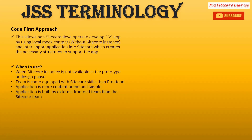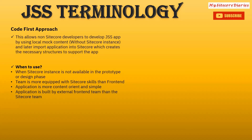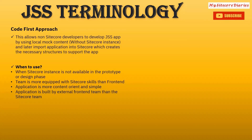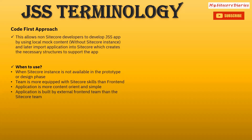Let's see a few more concepts: code-first approach and Sitecore-first approach. The code-first approach — we have already seen connected and disconnected mode. In the disconnected mode you do not connect to Sitecore, develop the application first, and then connect to Sitecore later. This allows non-Sitecore developers to develop the JSS app using local mock content, without a Sitecore instance, and later import that application into Sitecore, which creates the necessary structure to support the app. When to use it: when Sitecore instance is not available in prototype or design phase, when the team is more equipped with front-end skills than Sitecore, or when the application is more content-oriented, simple, and built by an external front-end team.